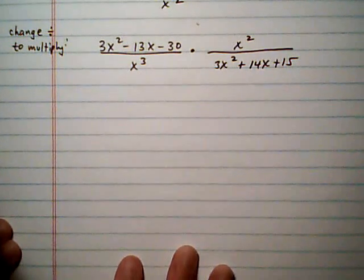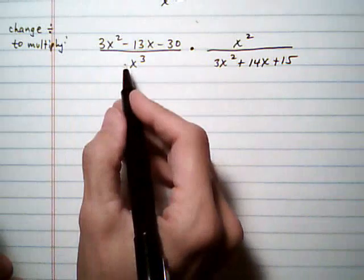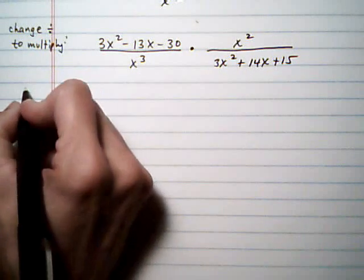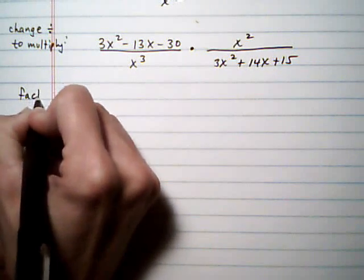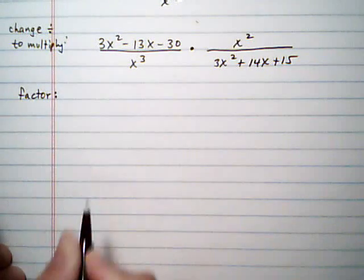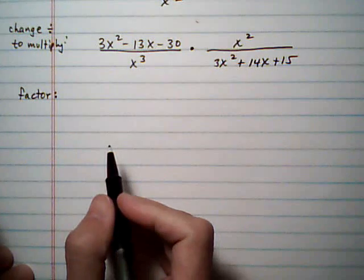Now we use the steps for multiplying fractions. The first thing we're going to want to do is factor so we can see what the common factors are. And after we factor, we're going to be able to cancel any common factors.